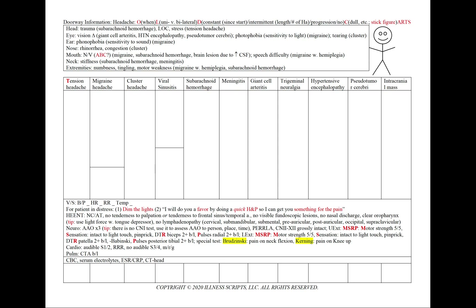Starting from the head and working our way down, we want to rule out trauma or a loss of consciousness concerning for a subarachnoid hemorrhage, or stress as seen in tension headaches. In the eye, we'll ask about vision changes — as can be seen in giant cell or temporal arteritis, hypertensive encephalopathy, or pseudotumor cerebri — or photophobia, a sensitivity to light, as we'll see with migraines, or tearing, as we'll see in cluster headaches.